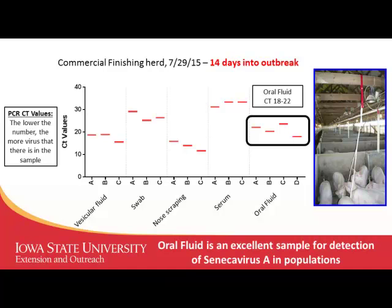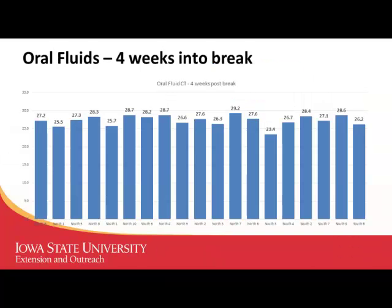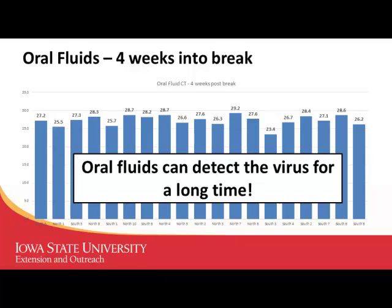CT values in the teens to low 20s means there's an awful lot of virus — oral fluid CT values were generally in the 18 to 22 range, indicating it was a very good sample for detection. Two weeks after that, we hung ropes in different pens and still found a fair amount of virus, with CT values in the mid to upper teens. Four weeks after the clinical break, most lesions were resolved but we could still find a fair amount of virus, confirming oral fluids as a good antemortem sample for population-level surveillance.